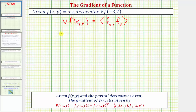In our case, the gradient of f — for the x component, we want to find the partial derivative of f with respect to x, which is the partial derivative of xy with respect to x. We differentiate with respect to x, treating y as a constant, and therefore the partial derivative is just y.